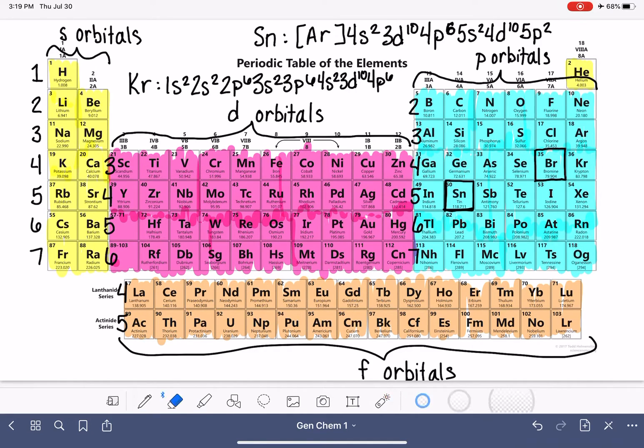Which is all of this, oops, all of this right here. Argon plus 4s², 3d¹⁰, 4p⁶. So what we can actually do is get rid of all of this stuff as well, including the symbol for argon. We can replace all of that with krypton, the symbol for krypton. The symbol for krypton represents all of this right here.